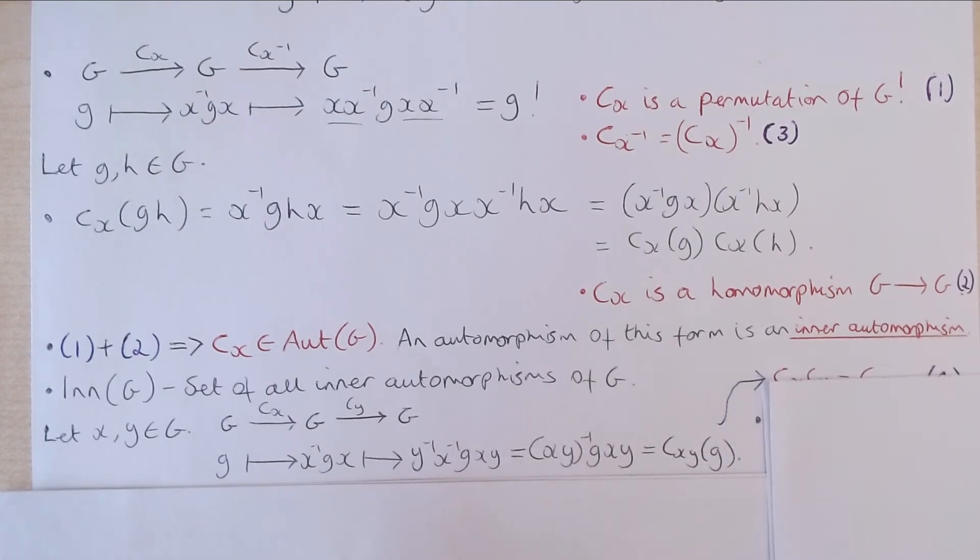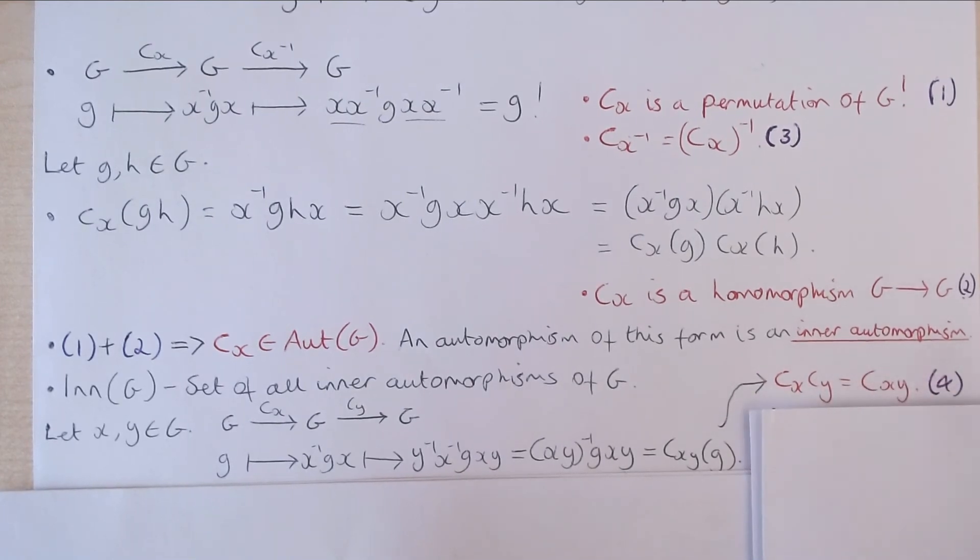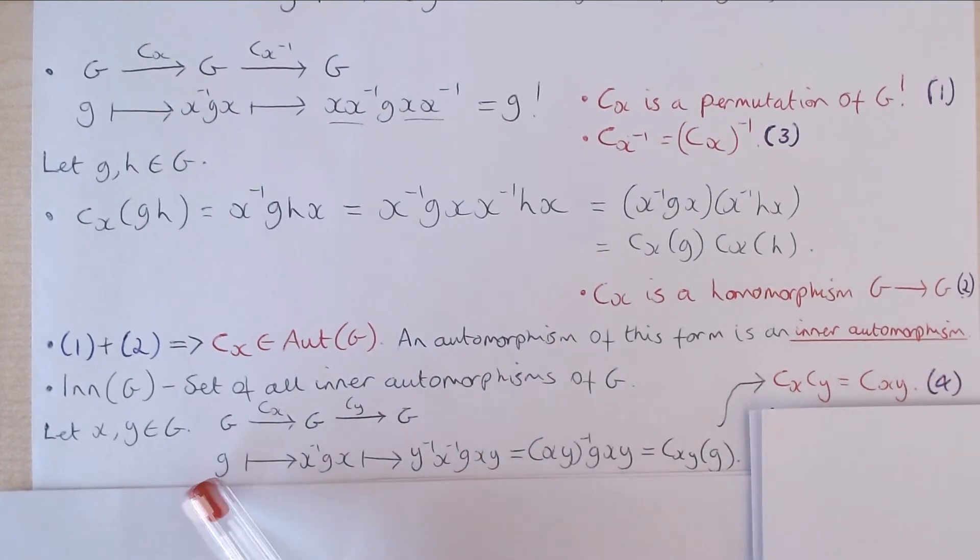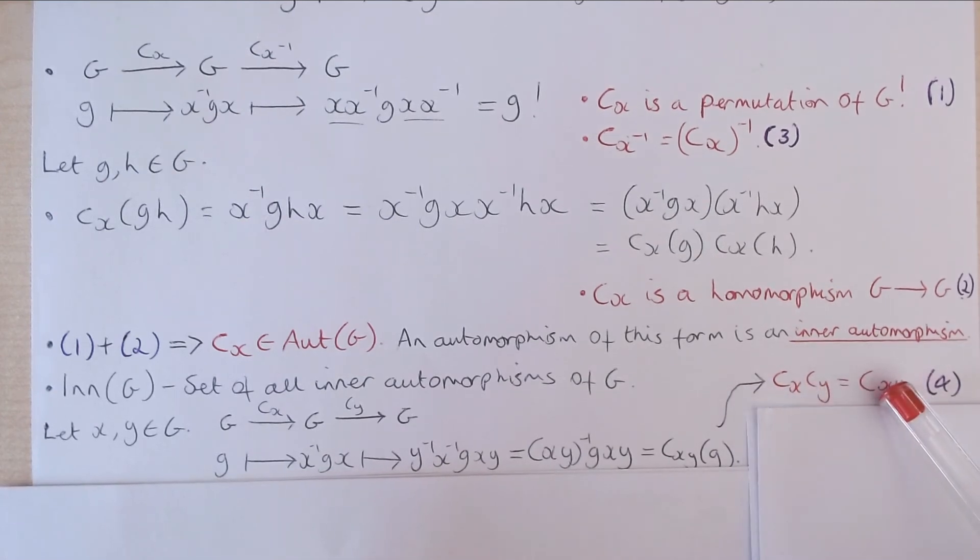What this says is that CX and CY equals C of XY as this element G was arbitrary. And then what we've got here is that the composition of two inner automorphisms is an inner automorphism.